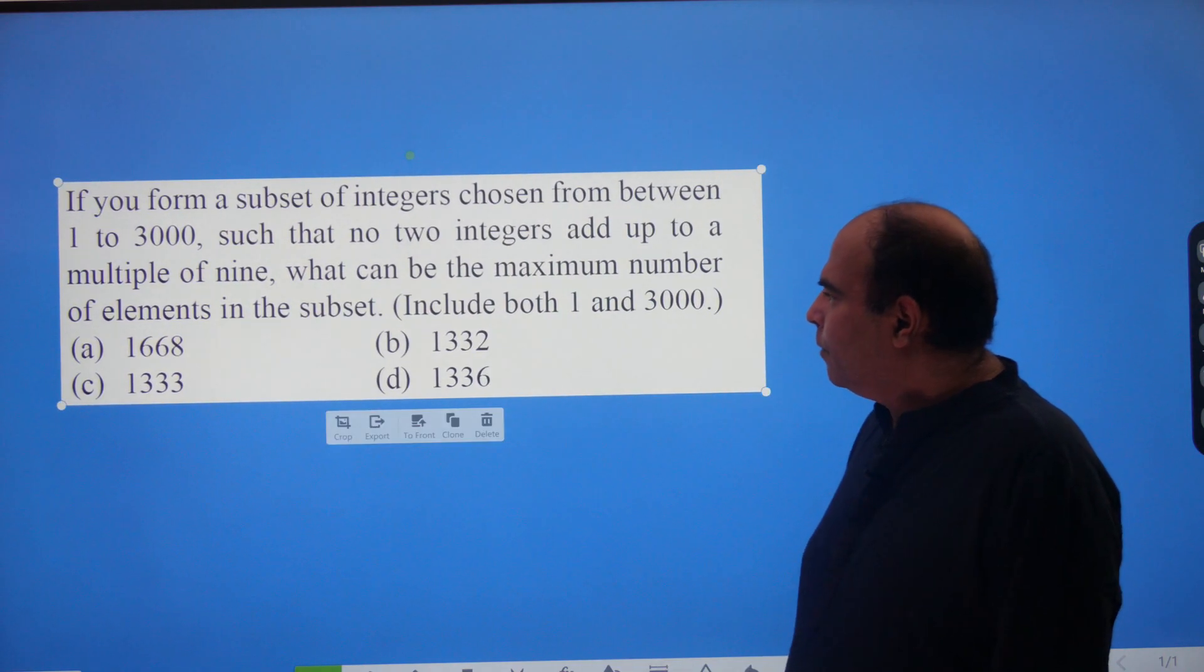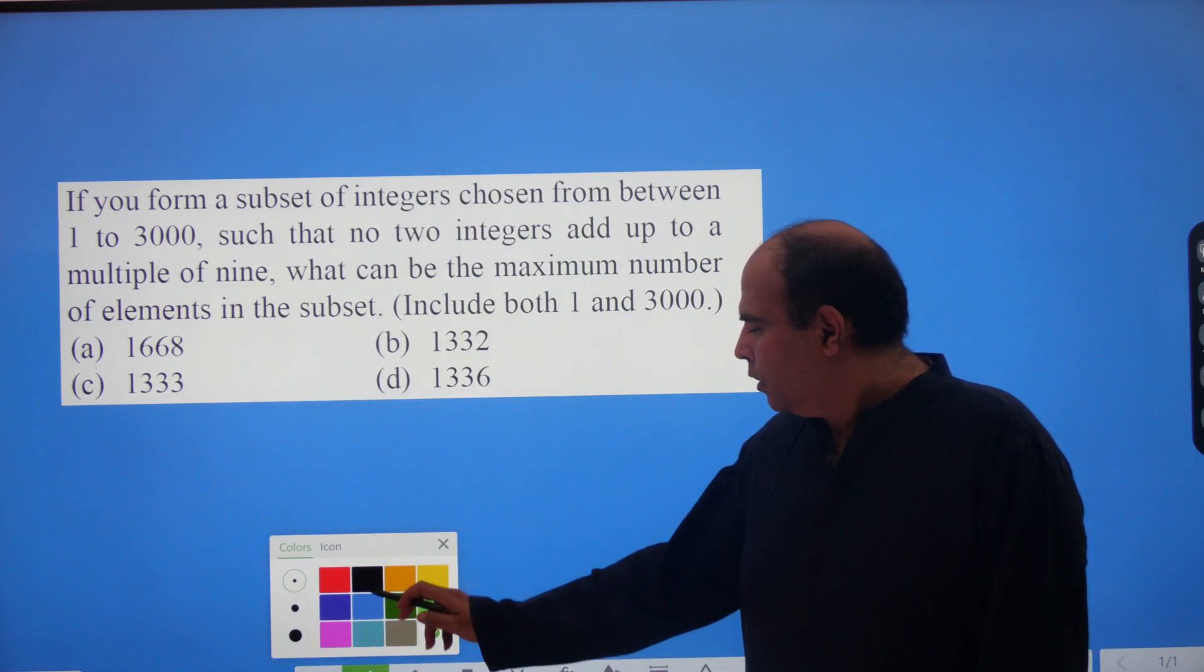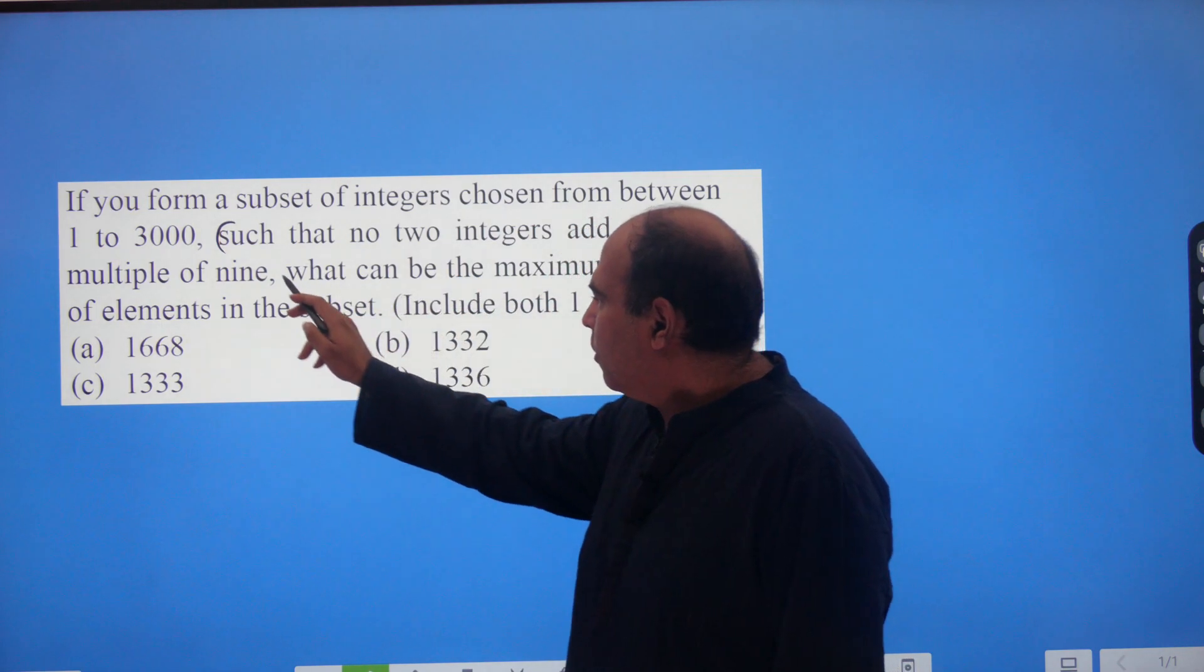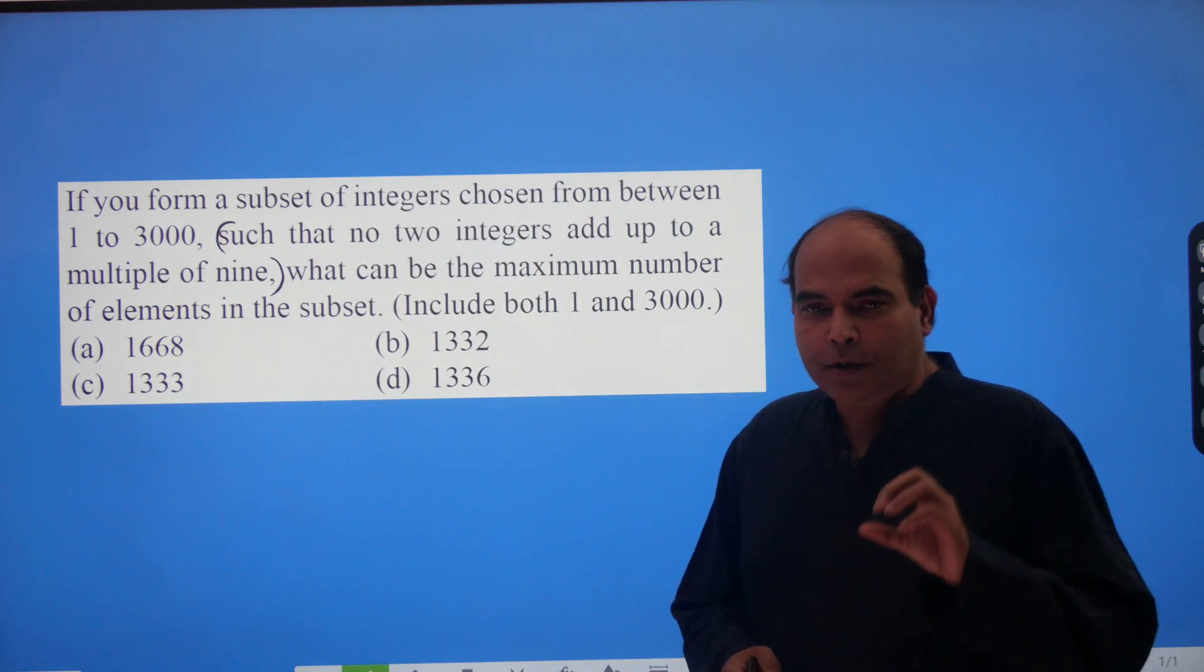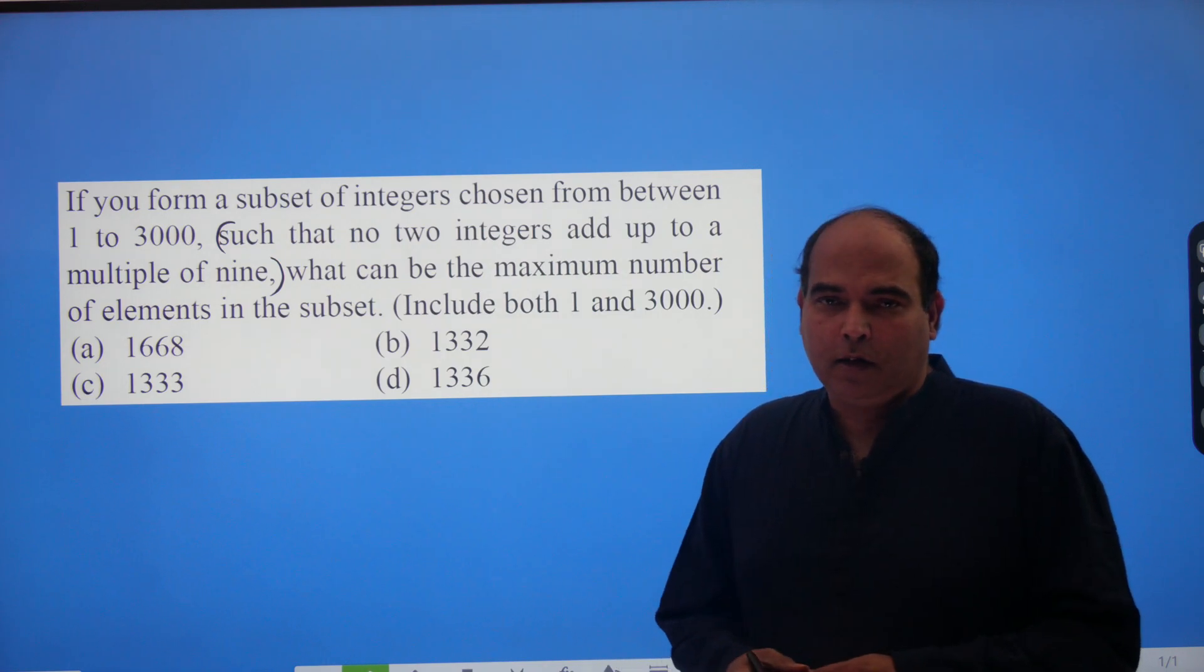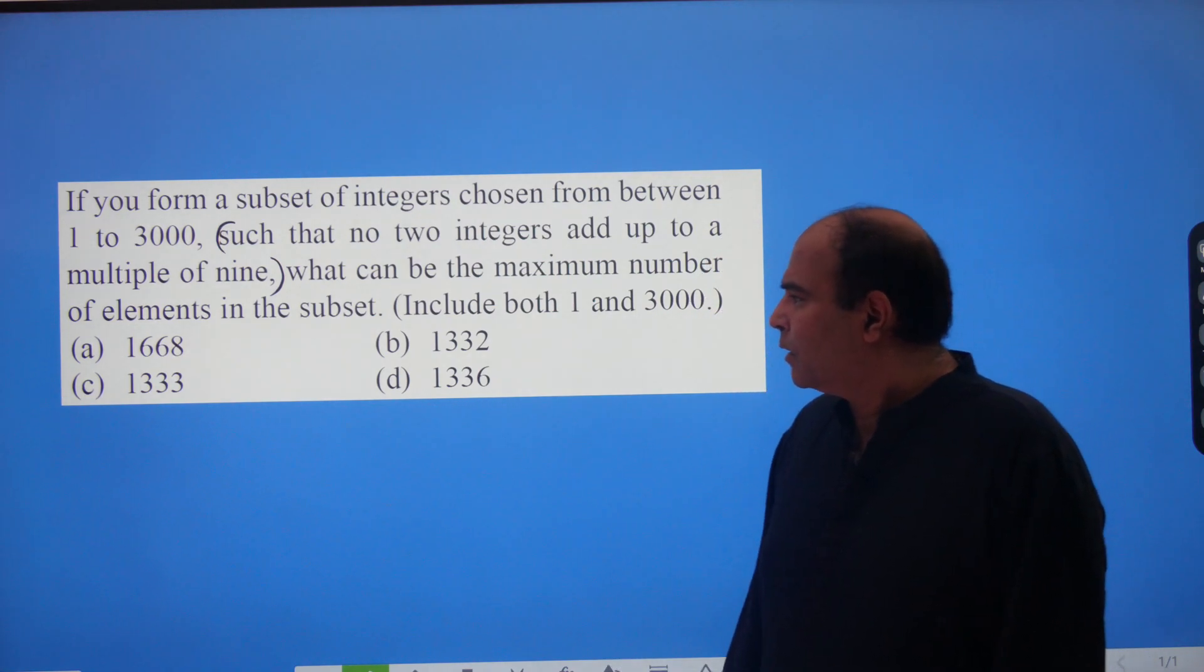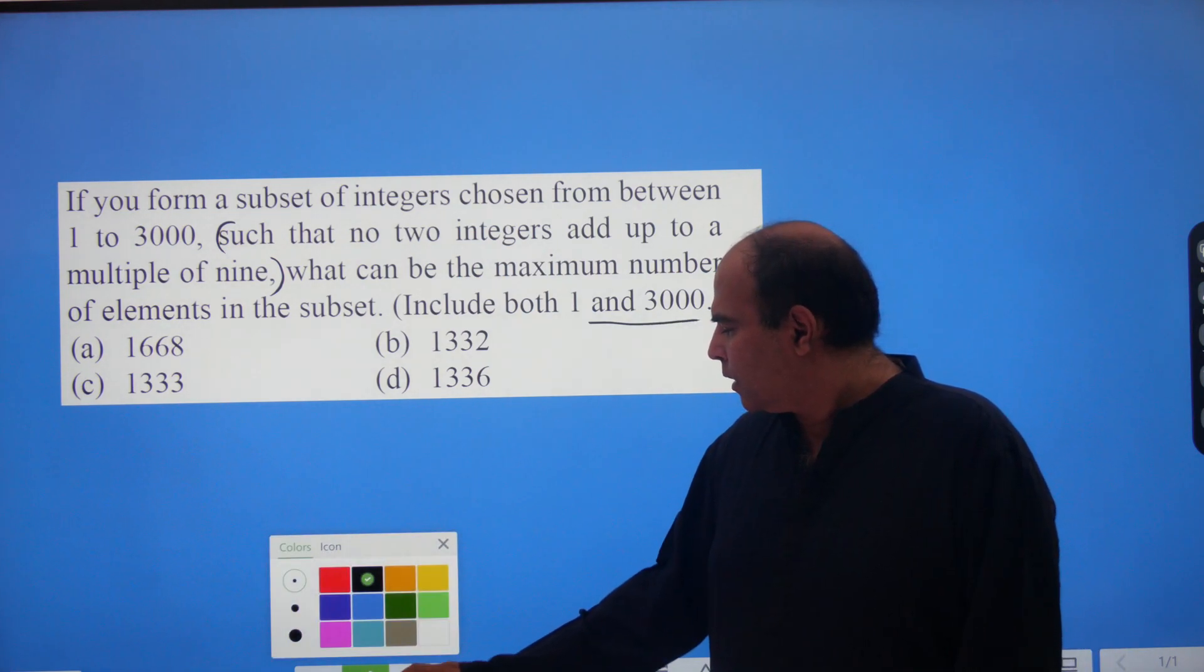If you form a subset of integers chosen from between 1 to 3000 such that no two integers, and you have to understand that part of the language, no two integers add up to a multiple of 9. And I always tell you that there are triggers inside the question that tell you what to do. The difference between the great solvers and the average solvers or even the great and the good is the quality of the understanding of the triggers. So, what do I want here? No two integers add up to a multiple of 9. What can be the maximum number of elements in the subset? Include both 1 and 3000. I am looking for number of elements in the subset.